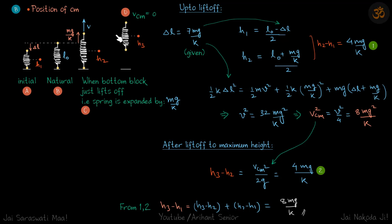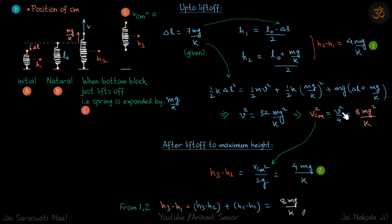The velocity of the center of mass is vcm = (m·v + m·0)/(m + m) = v/2, since the lower block's velocity is zero at lift-off. Therefore vcm² = v²/4 = 8m²g²/k.